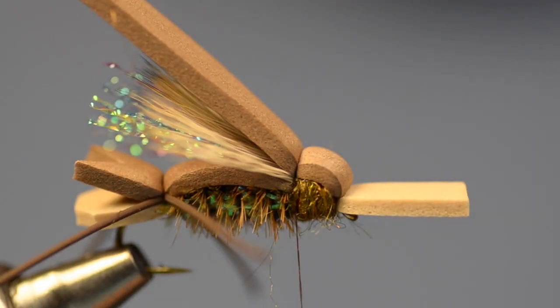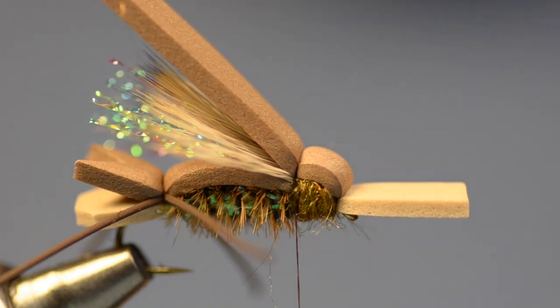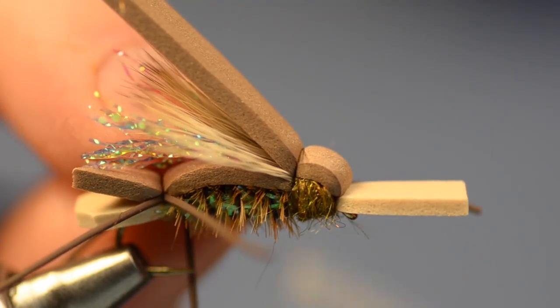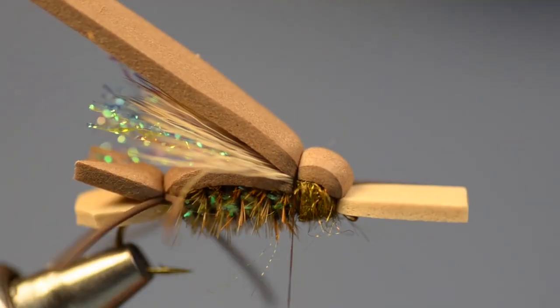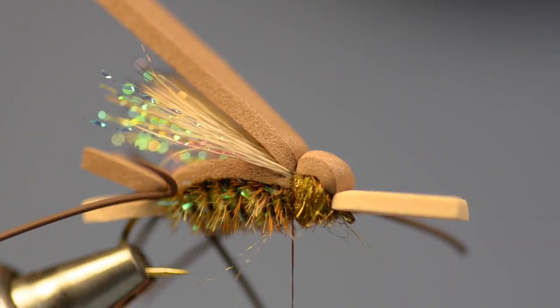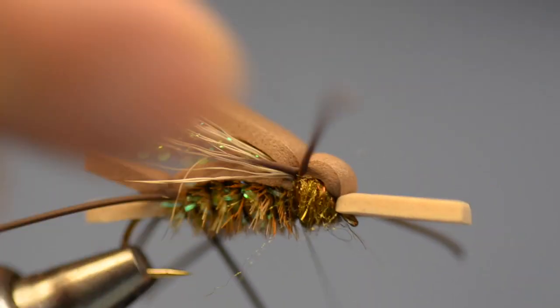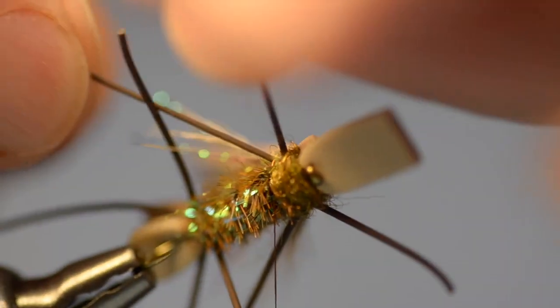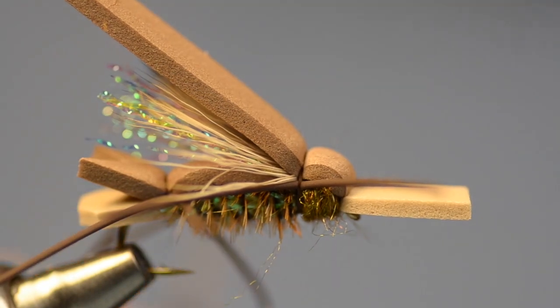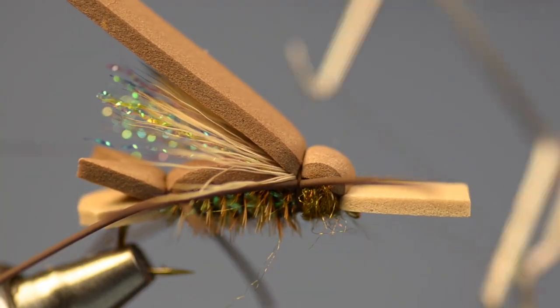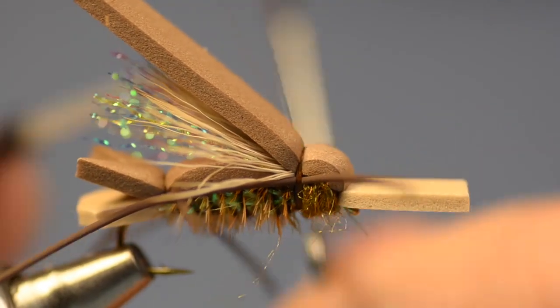So I'm going to lay the first one here along the near side. Catch it with a couple turns. One in along the far side. A couple turns. And I always like to check and make sure that they're lined up evenly on both sides. Then I can come right through that foam tie down and whip finish there.